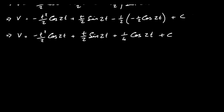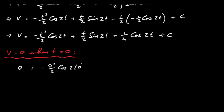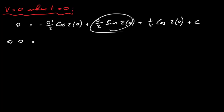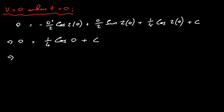We were told v = 0 when t = 0. Substituting in: 0 = -(0)²/2 · cos(0) + 0/2 · sin(0) + ¼ cos(0) + c. The first two terms become zero, and cos(0) = 1, so we get 0 = ¼ + c, giving c = -¼.